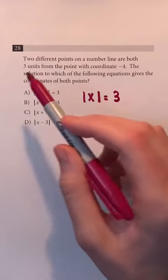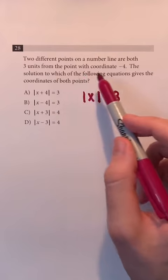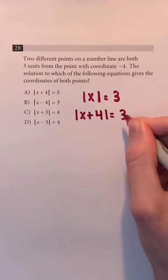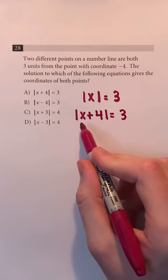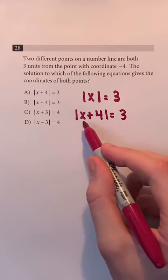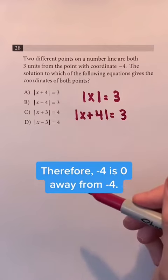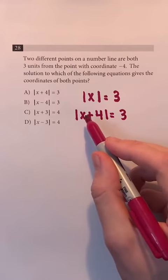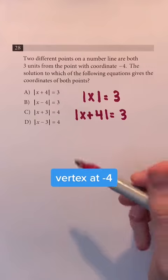But what if we want to find values of x that are 3 units away from the point with coordinate negative 4? We can do this by adding 4 to x. The reason that we add 4 is because if x is negative 4, negative 4 plus 4 is 0. Therefore, negative 4 is 0 away from negative 4. In other words, the absolute value of x plus 4 has a vertex at negative 4.